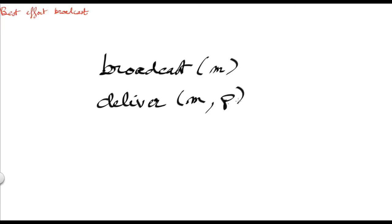Notice that in this course I may use many terms that have the same meaning: processes, nodes, and machines — I can use any of these words to mean the same thing. Now that we've seen that a node can either broadcast messages or deliver messages broadcast by other nodes, let's see what properties are guaranteed by a best effort broadcasting algorithm. There are actually three properties.